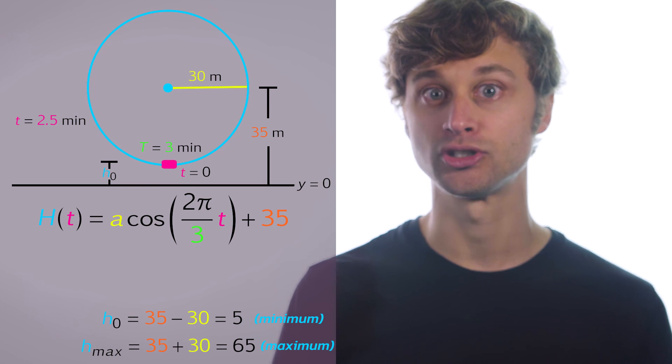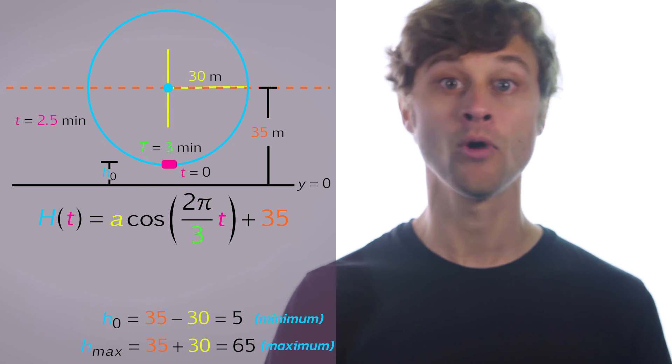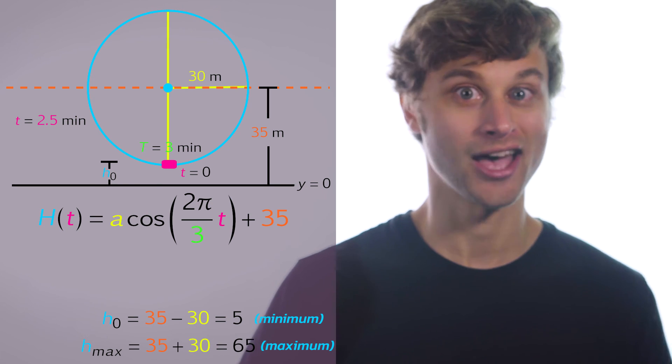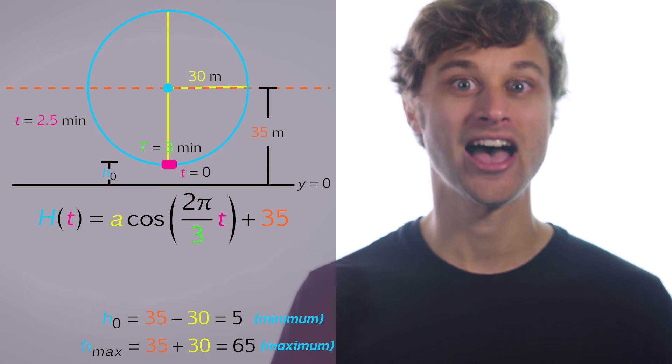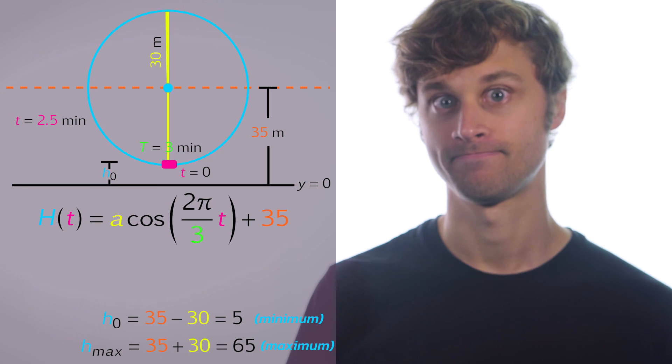Finally, a. a is our amplitude of the function, which is the distance between the midline and the maximum or the midline and the minimum. It turns out that that is the same value whether we measure it up or down, and we find that that value is just the radius of the Ferris wheel, which is 30.